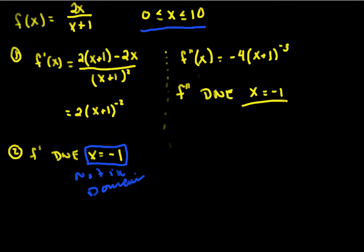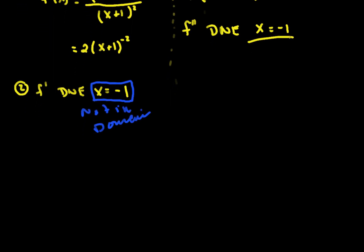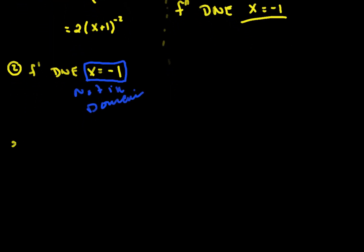So if we are to do the sign graphs of f prime, well, it is just from 0 to 10. That's our domain. There is no place where it doesn't exist, nowhere where it can change signs. So let's use any value you want in that interval. Say the value 1, that's going to be our checkpoint. And if I put 1 into the first derivative, I'm going to get 2 over 2 squared, or 1 half, which is positive. So that means the graph is positive in the whole interval. Therefore, it is increasing over the entire interval.